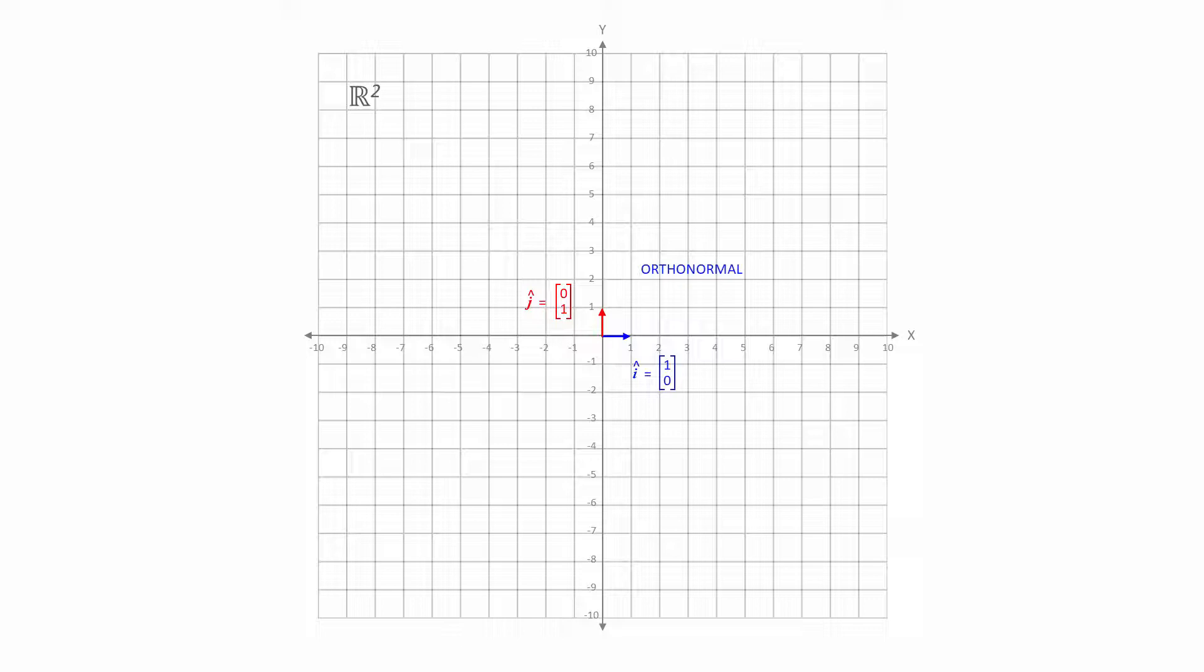Notice that i-hat has coordinates <1,0>, and j-hat has coordinates <0,1>. When used to create linear combinations, i-hat and j-hat are collectively known as the standard basis. They're also sometimes referred to as the natural basis.